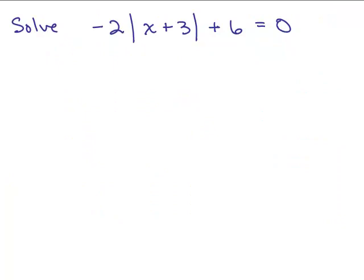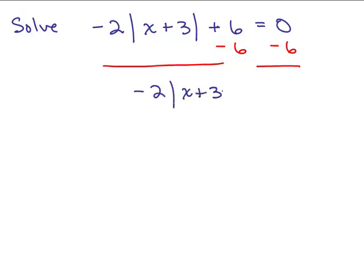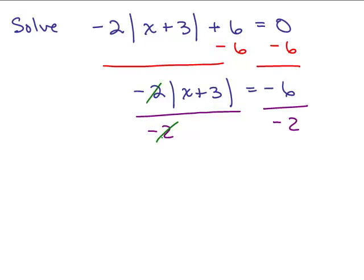Here's another example: negative 2 times the absolute value of x plus 3, plus 6, equals 0. Before going further, we need to isolate the absolute value part. First, subtract 6 from both sides to get negative 2 times the absolute value of x plus 3 equals negative 6. Now divide both sides by negative 2 — think of negative 2 as the coefficient of the absolute value — to finally isolate: absolute value of x plus 3 equals 3.